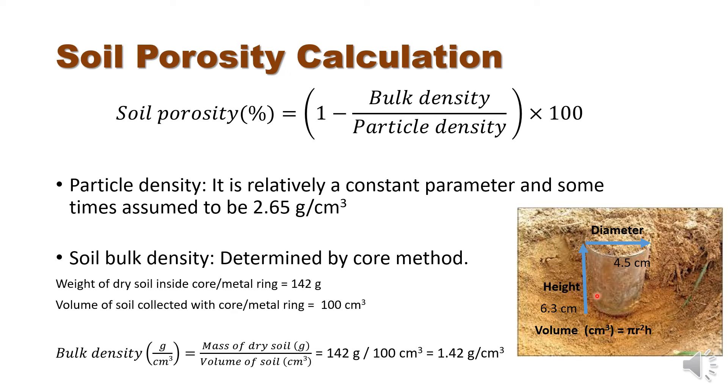h is the internal height of this metallic ring, and diameter of the ring. If we multiply with π (3.14), we will be able to find out the volume of the soil inside the core. So in our case, it is 100 centimeter cubed.